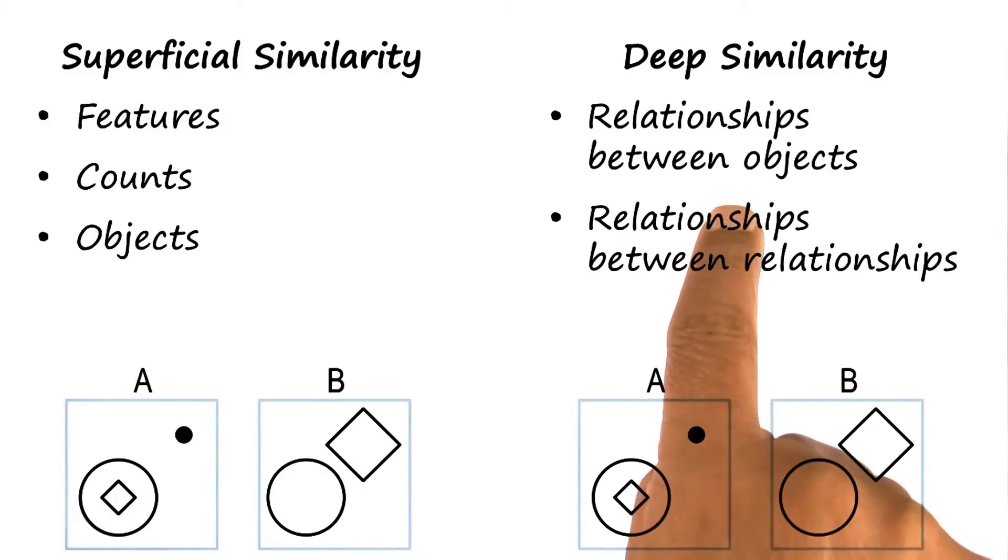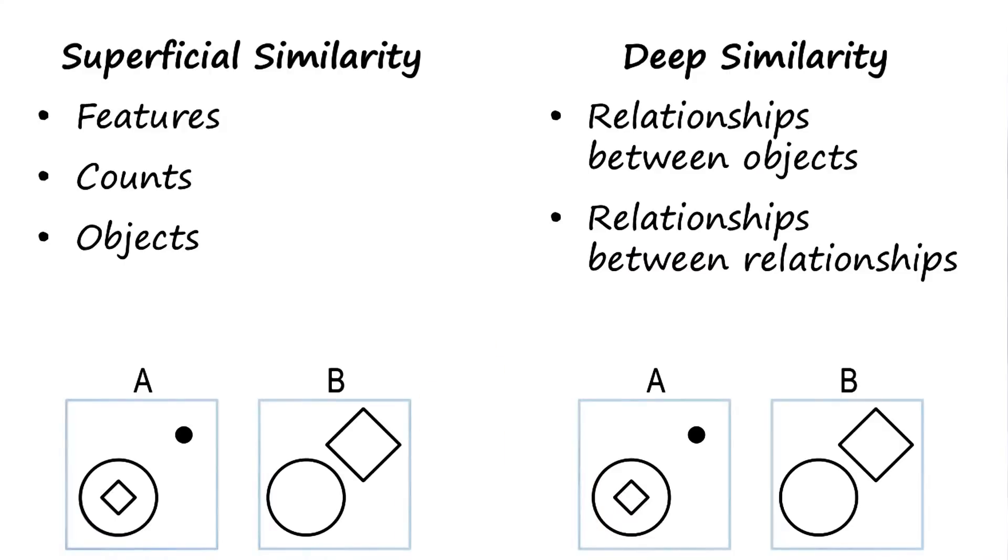What about relationships between relationships? Let us compare A and B. In going from A to B, the dot has disappeared and the square has come outside the circle and become bigger. Now we can compare this relationship between A and B with some of the relationship between C and D, in which too some object might be disappearing, and another object which is in the center of the circle comes out of the circle.